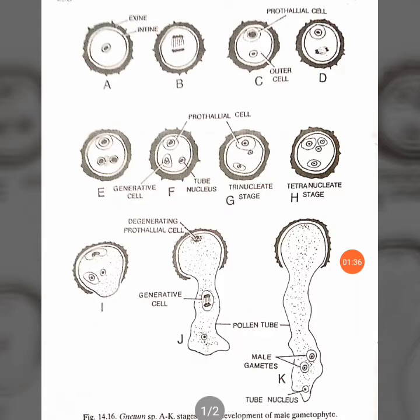In the species Gnetum ula, the development of the pollen grain was studied by Negi and Madhu Lata in the year 1957. According to their studies, development occurs both before and after pollination — just like other gymnosperm plants we have already studied.